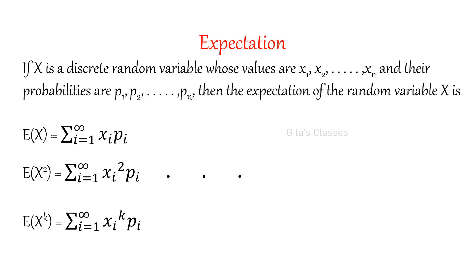Next is expectation. For a discrete random variable capital X, for each xi we assign probability pi. The expectation of the random variable x is defined as E of x equal to sigma, i varies from 1 to infinity, of xi times pi. Each value is multiplied by its corresponding probability, and you take the summation.